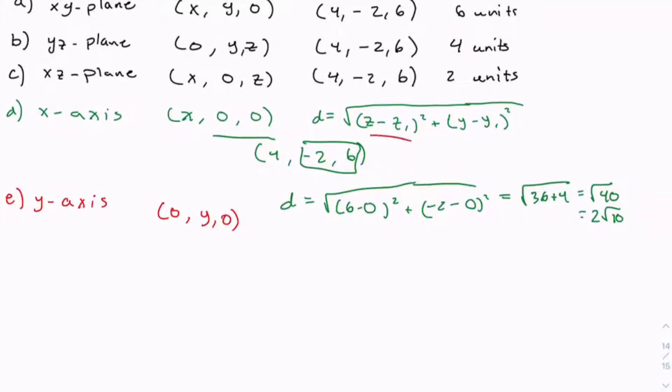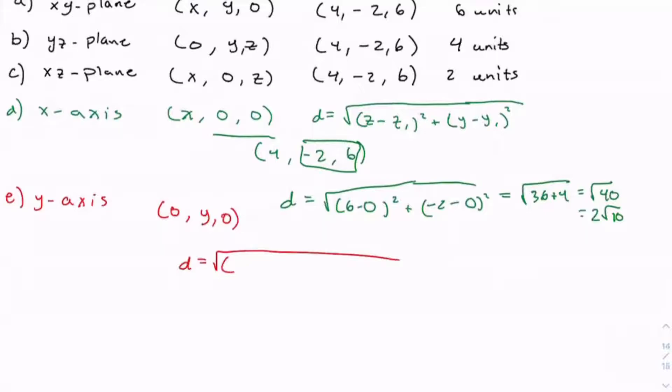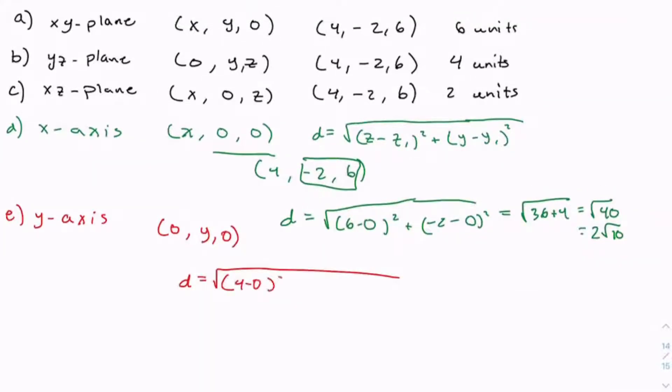Rather than this being z and y, we're going to use x and z. So we have d = √[(4-0)² + (6-0)²]. This equals √(16 + 36), which equals √52. See if you can simplify this: 2, 26, 2, and 13 equals 2√13.